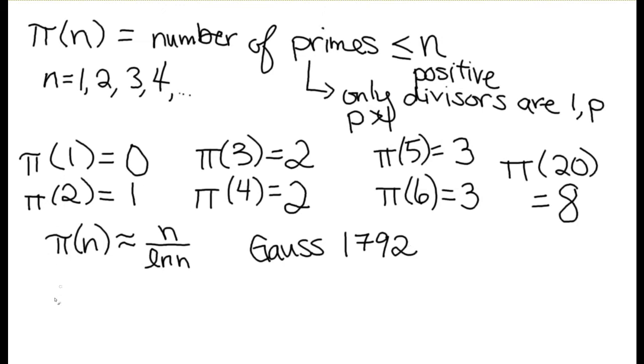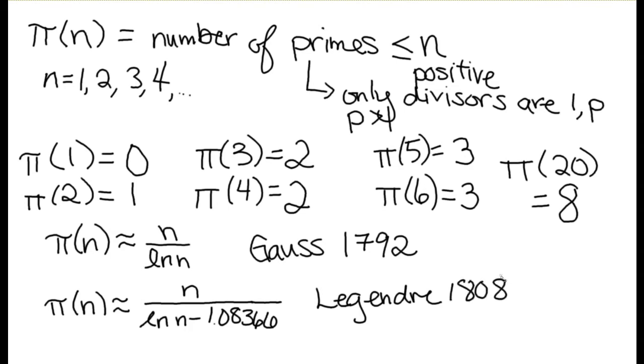And then we got a new estimate less than 20 years later. A better estimate isn't just n divided by natural log of n. It's n divided by the natural log of n minus 1.08366. And this is an estimate that was brought forth by the mathematician Legendre in 1808. So this is a little bit of a corrective term. Natural log of n doesn't get you very close, but if you subtract this number from it, you get a little closer.